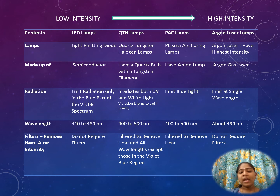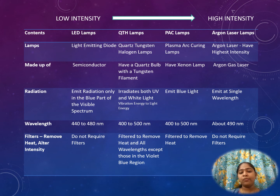Filters — why are filters used? They remove heat, alter the intensity required, and remove unnecessary wavelengths. In LEDs, filters are not required. In QTH lamps, filters remove excess heat and all unnecessary wavelengths except those in the violet-blue region. PAC lamps remove heat using filters, while argon lamps do not require filters.